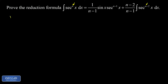We'll start with our original integral, secant to the n of x dx. To use integration by parts, I need a piece that's easy to find the antiderivative of. I can use secant squared, because its antiderivative is just the tangent function. So we split off a secant squared, ending up with secant to the n minus two of x times secant squared x dx.